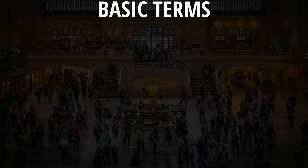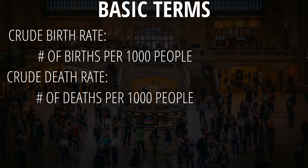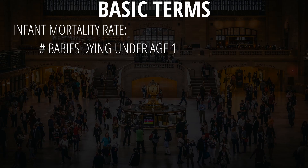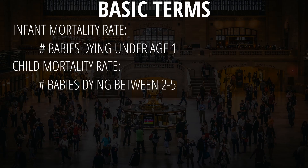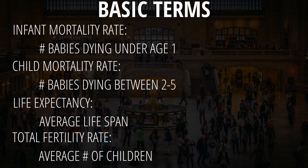Before we delve further into population pyramids, let's cover some basic terms. Crude birth rate is the number of births per 1,000 people. Crude death rate is the number of deaths per 1,000 people. Natural increase rate is CBR minus CDR — essentially the rate at which your population is growing. Infant mortality rate is the number of babies dying under the age of one, and child mortality rate is the number of babies dying between the ages of two and five. Life expectancy is the average age one is expected to live in a country, and total fertility rate is the average number of children a woman will have through her childbearing years.